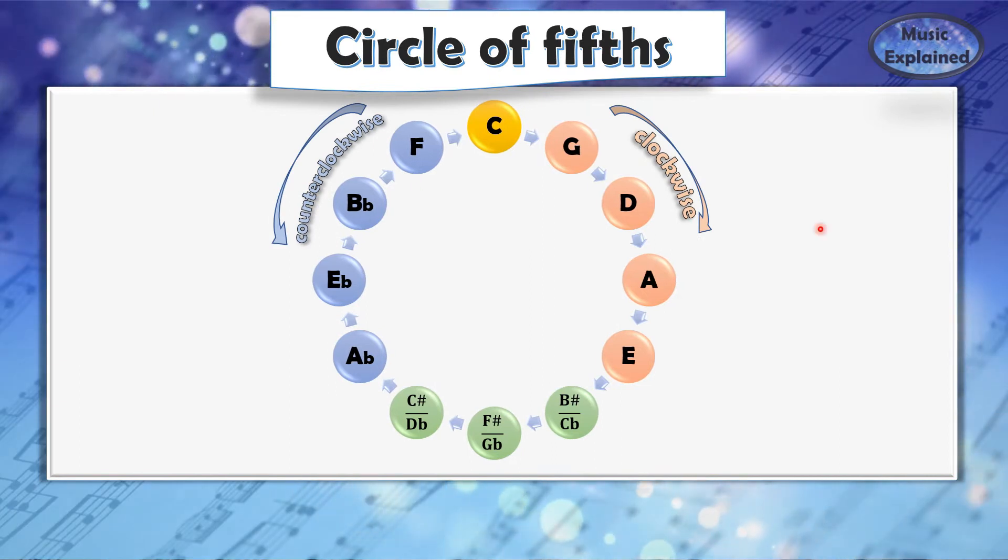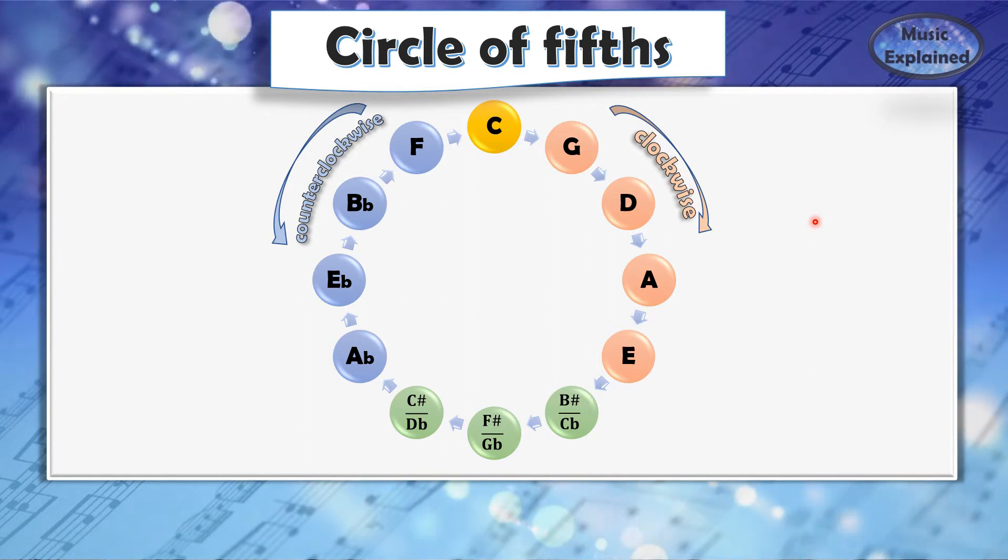Today, we are going to use the circle of fifths to figure out the order of the sharps and flats on the music staff. The pitches or notes on the circle of fifths are laid out in the interval of fifths if you move clockwise or in fourths if you move counterclockwise.